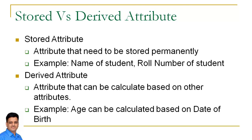Aur aisa concept isliye diya gaya kyunki derived attribute ko store karne ki zarurat nahi hai. Kyunki jab bhi derived attribute ki value ki zarurat hogi, aap iski value kisi doosre stored column se nikal lenge. For example, aapne date of birth store kiya. Ab aapko age ki zarurat hai, toh aap current date mein se date of birth subtract karke student ki age nikal sakte hain. So age and experience are examples of derived attributes, kyunki unhe runtime pe calculate kar lenge based on the value of stored attributes.